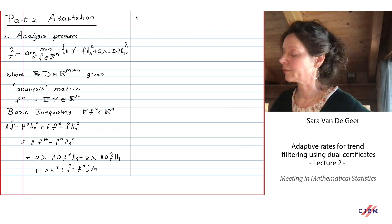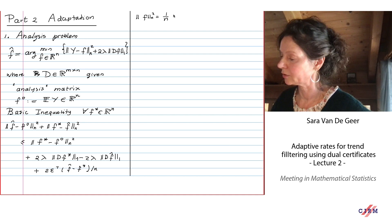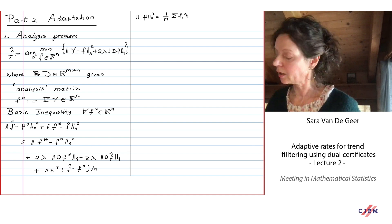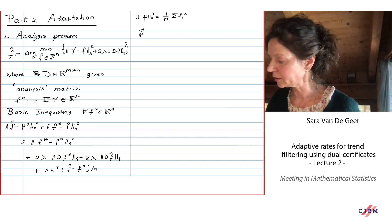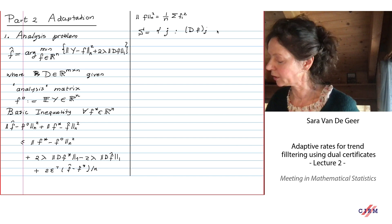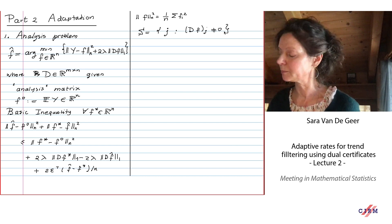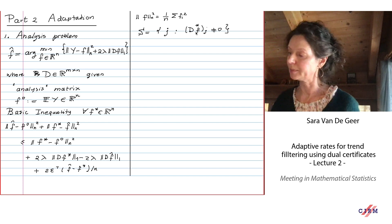F_N here is just one over n times the sum of f_i squared. The aim is: we fix on f-star, which could be one that trades off bias and variance. Our aim is to look at adaptation to the active set of f-star — those values of the penalty which are non-zero. I want an estimator which behaves as if I knew those values. In general, f-star depends on the unknown f_0 and is an approximation of it, so you don't know the active set and you want to adapt to it.